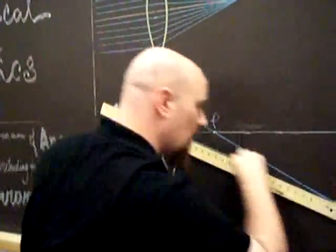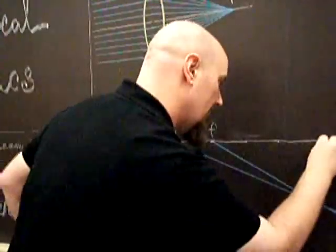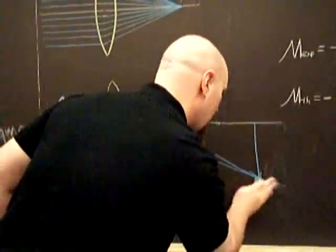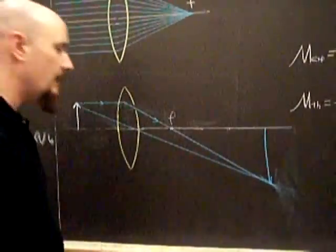So now, right through the center. So this, the intersection, is where the image will appear.